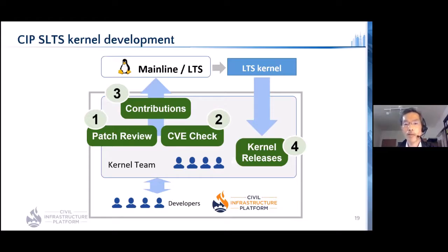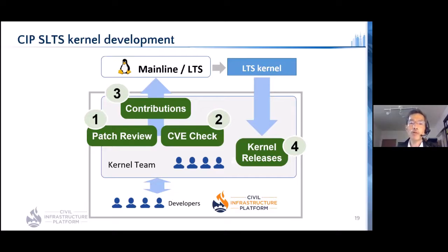By incorporating necessary patches, the team releases CIP kernels based on upstream artifacts. This is the big picture of the kernel team activities. Patch review, CVE check, contribution, and kernel releases are the four major tasks of the CIP kernel team.